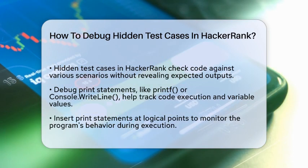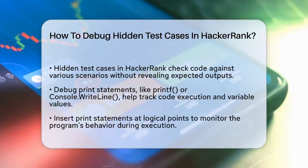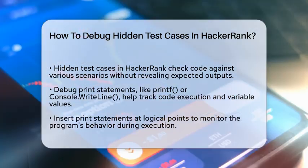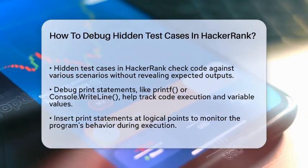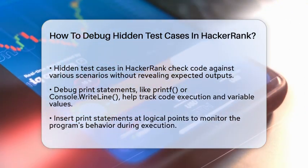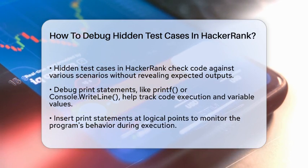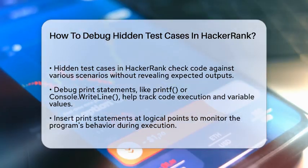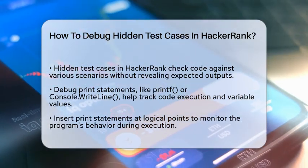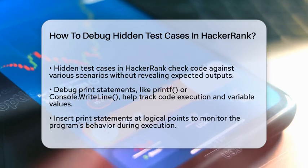To start debugging, you can use debug print statements. Insert print statements like printf or console.writeline at different logical points in your code to see what's happening as your program runs. For example, if you're writing a program to find the sum of two integers and it's not giving the expected output, add print statements to check the values at each step of your code.